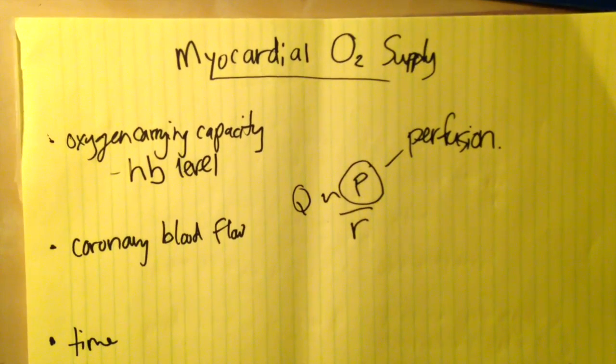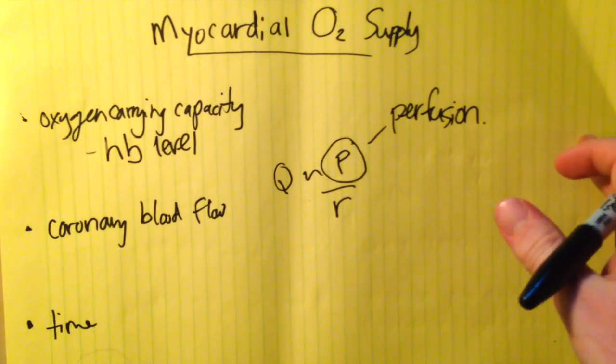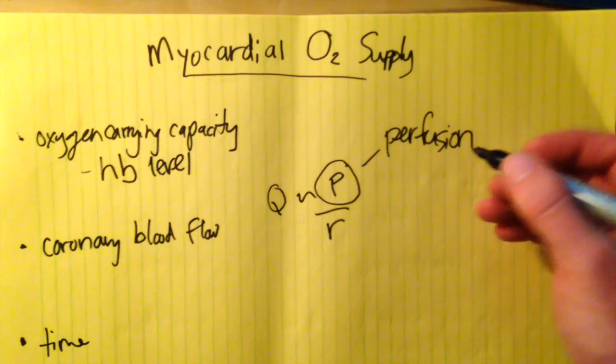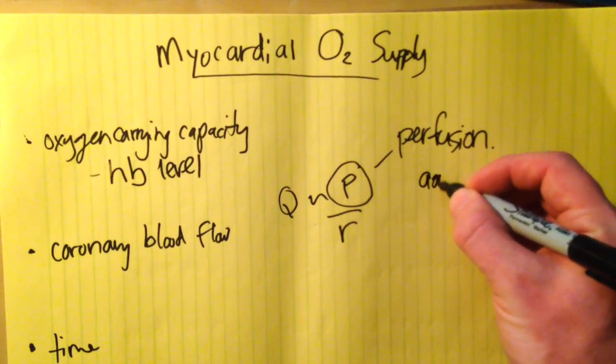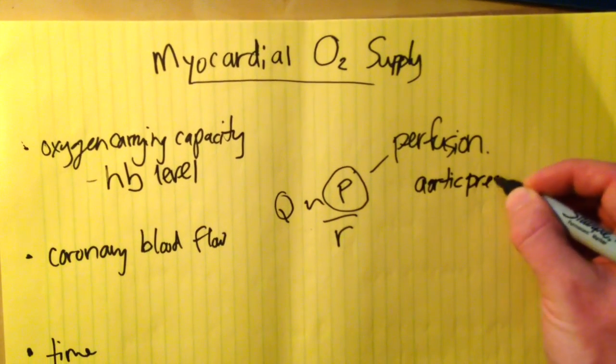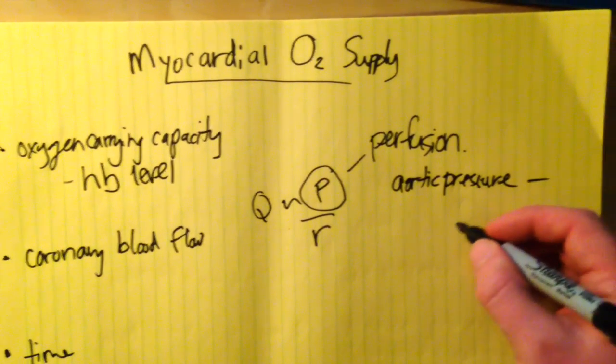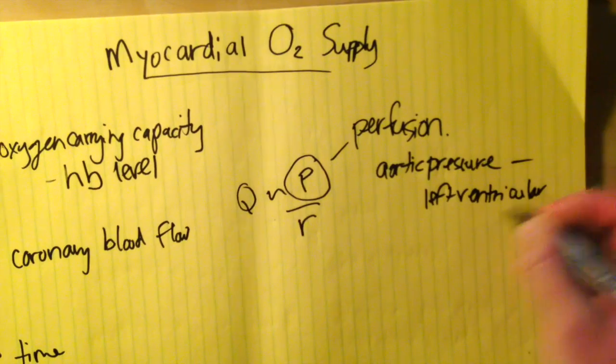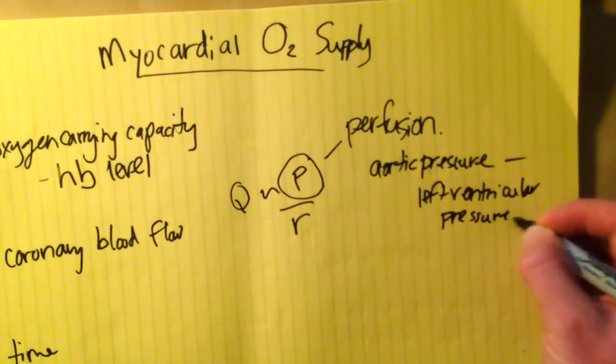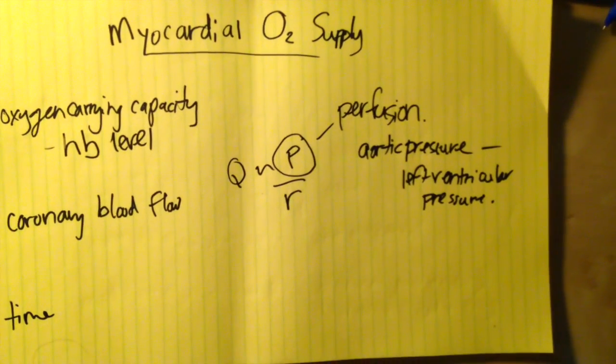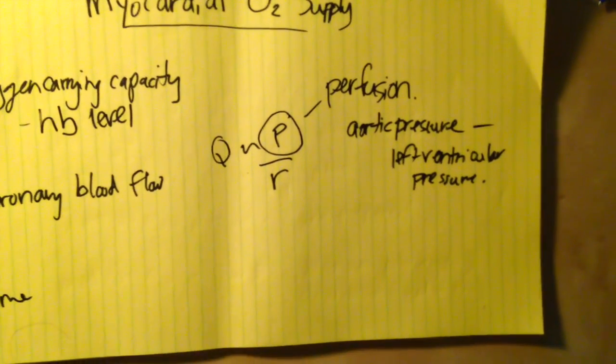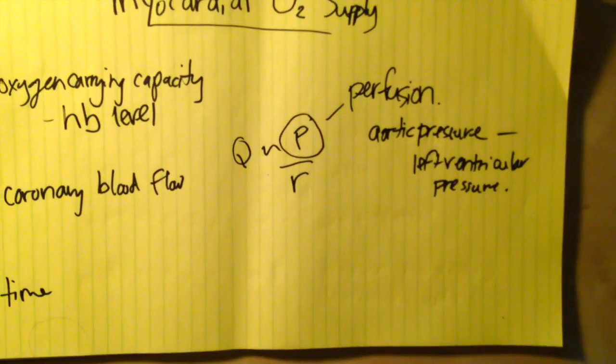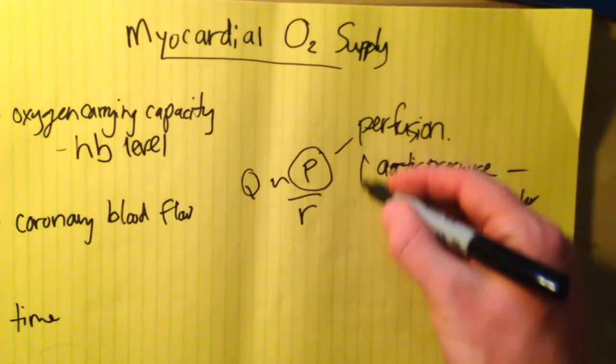The coronary arteries are perfused during diastole and they're perfused backwards from the aorta. So our perfusion pressure is aortic pressure in diastole minus the left ventricular pressure in diastole. This makes sense because the coronary arteries flow from the aorta down through the wall of the heart and the end pressure is in the ventricle at the end of diastole.